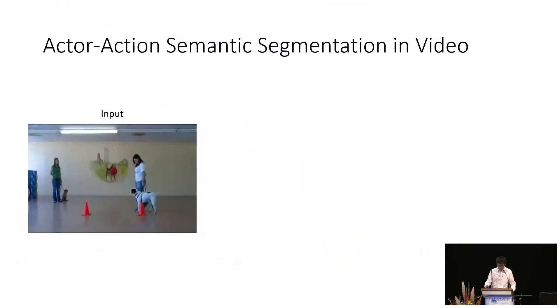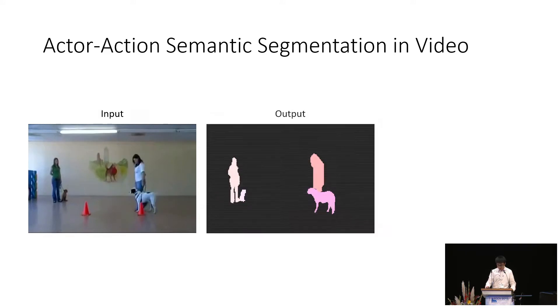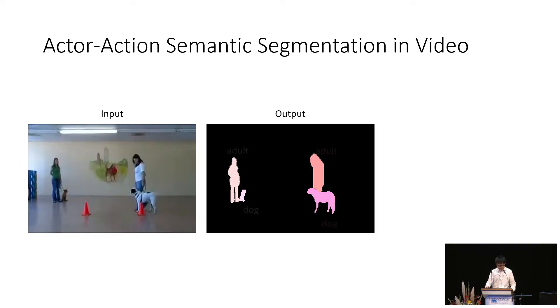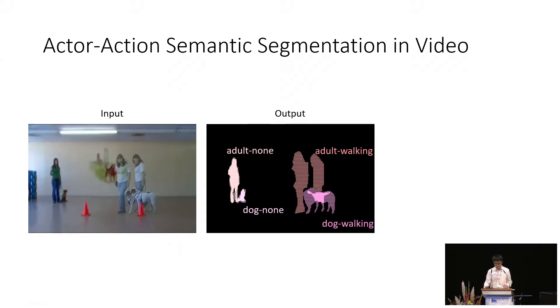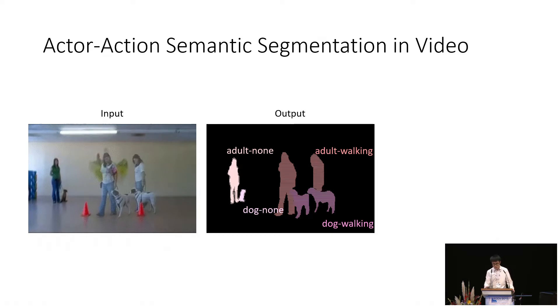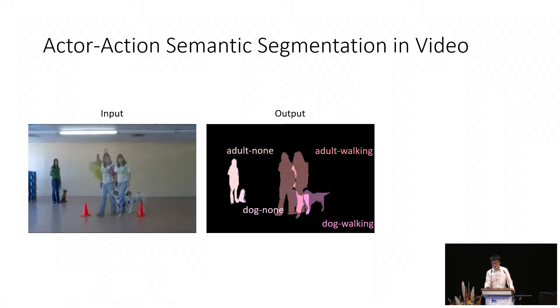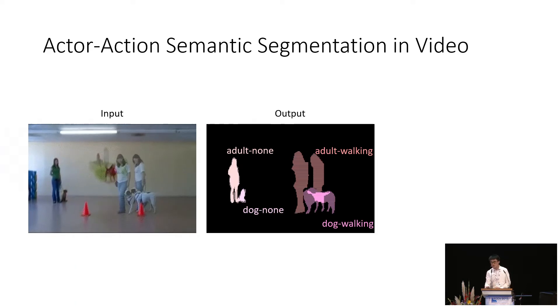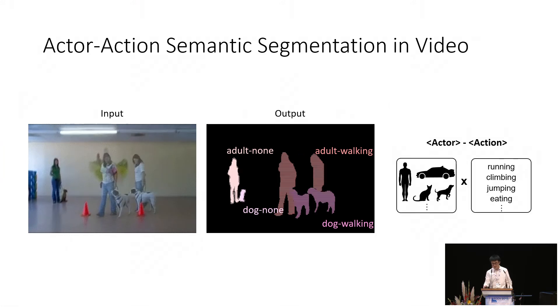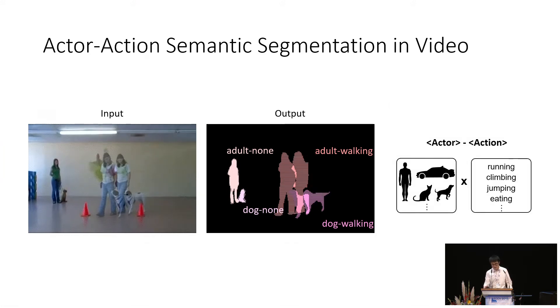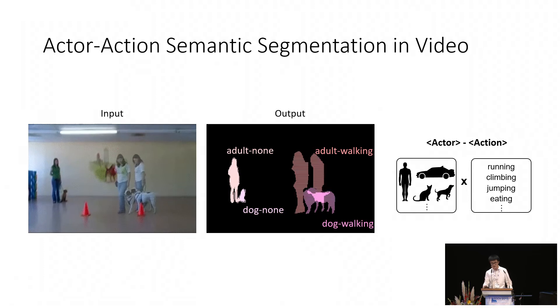More formally, actor action semantic segmentation is a video understanding task where the input is a video clip and the goal is to predict the actor labels and the action class labels for each actor at a pixel level in every frame. Specifically, actor categories may include humans, animals, and inanimate objects, and we focus on atomic actions like running and eating.